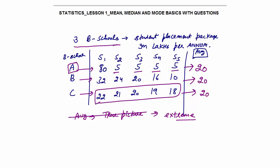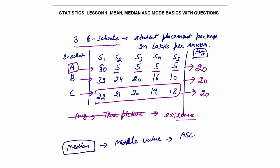So my advice to every student applying to a B-school for an MBA: always check one other value — that is the median. Average is one representative of central value; the other is the median. Median is the middle value, used to find the middle value after arranging the terms in ascending or descending order. Once you arrange the terms in order, you find the middle term, which gives you the median.